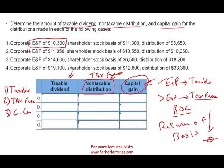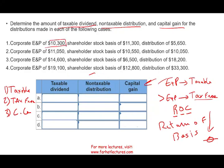Let's look at the exercise. Scenario one: corporate E&P of $10,300; shareholder basis of $11,300; distribution of $5,650. Since we have plenty of E&P, that distribution is fully taxable. The non-taxable portion is nothing, and the capital gain is nothing.